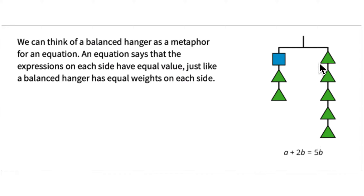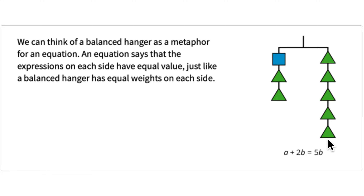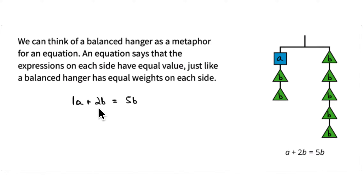We're going to call the blue square A and the triangles B. There are two triangles, so that's two B, and five triangles, so that's five B. So we have one A plus two B equals five B.